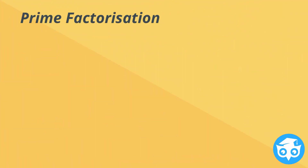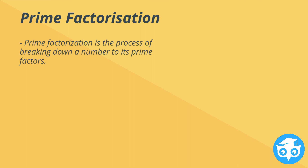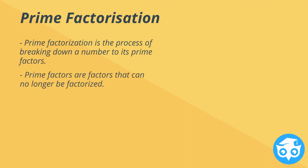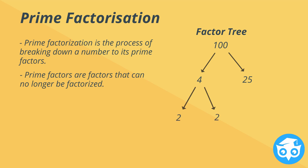Prime factorization is a process of breaking down a number to its prime factors. Prime factors are factors that can no longer be factorized. My favorite method is by using a factor tree. For example, we have 100. We can break it into 4 and 25. We can break 4 into 2 and 2, and we can break 25 into 5 and 5. So conclusively, we can write 100 = 2 × 2 × 5 × 5.